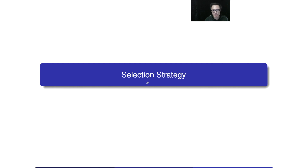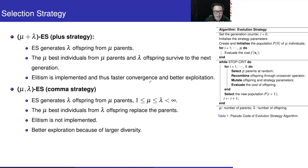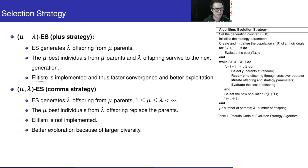This section is about the selection strategy in Evolution Strategies (ES). We have the plus rule as well as the comma rule. The plus strategy implements elitism, while the comma strategy does not implement elitism.